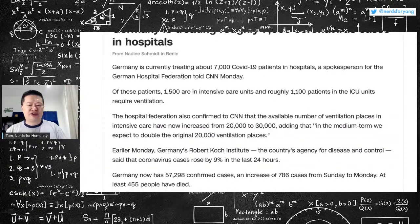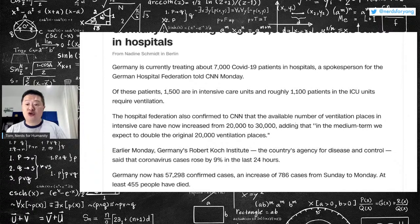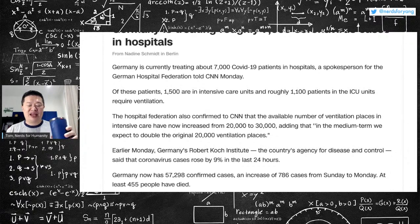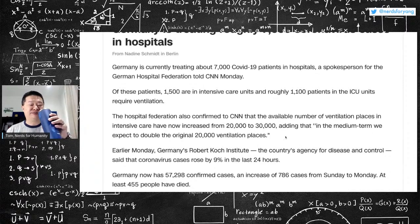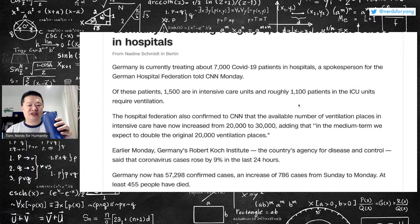Now, the Germans are very open about the total number of ventilation units they have. So they've increased it to 30,000, and they're hoping to double it to 40,000. So right now, they are using 1,000, and they have capacity to go to 30,000.